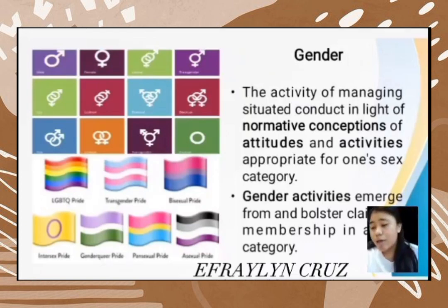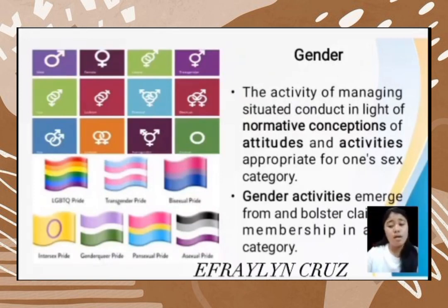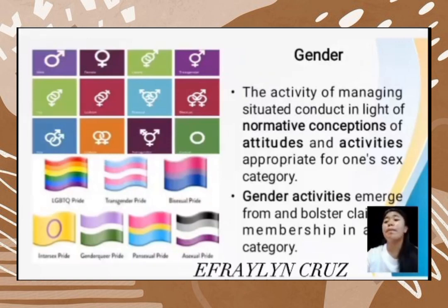The genderqueer pride flag represents people who generally do not subscribe to the gender binary or traditional gender norms, and may identify with neither, both, or a combination of genders. Lavender represents androgyny and queerness, white represents a gender identity or gender neutrality, and green — the inverse of lavender — represents identities defined outside the binary. The pansexual pride flag is a pink-and-yellow flag designed as a symbol for the pansexual community to increase its visibility and distinguish itself from bisexuality.